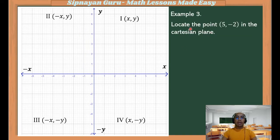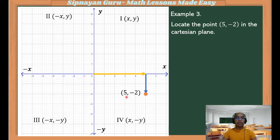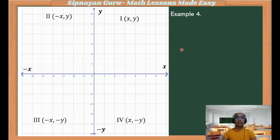Next example: locate the point (5, -2) in the Cartesian plane. Our x is positive, so we count from the origin 5 units to the right: 1, 2, 3, 4, 5. Our y is negative, so from here we will count 2 units down. And this would be the location of the coordinate (5, -2). As you can see, if you draw a broken line here and form a rectangle, the point is placed at the vertex of the rectangle. That is why we call the Cartesian plane the rectangular coordinate system.